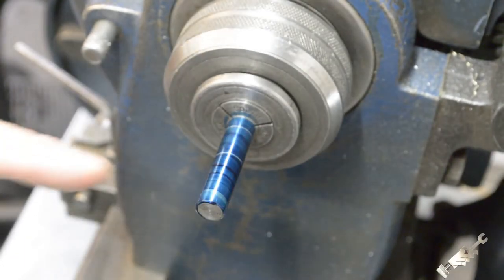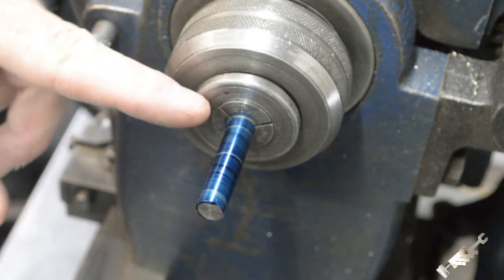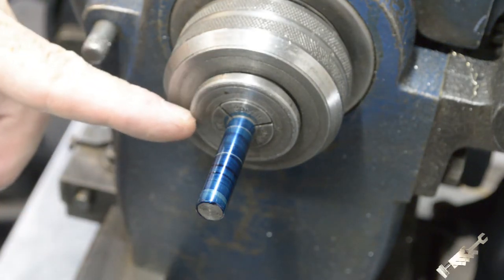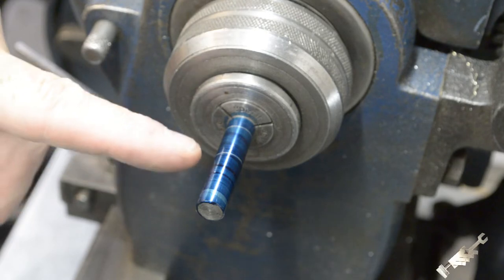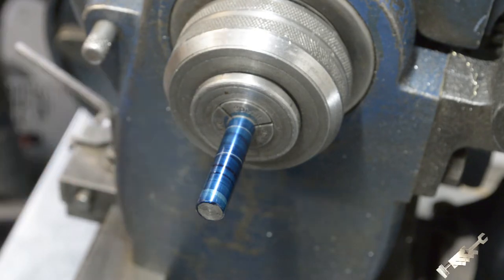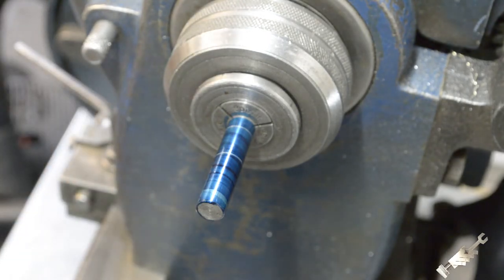Okay, so I have it laid out. Overall length, 1 inch, 400 thousandths, and the turndown part is 875. Alright, let's get started.